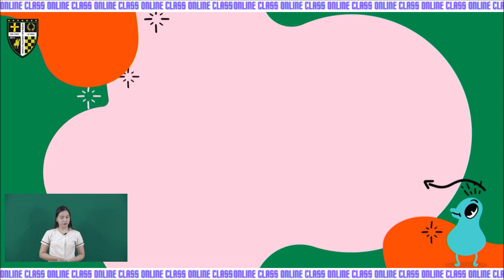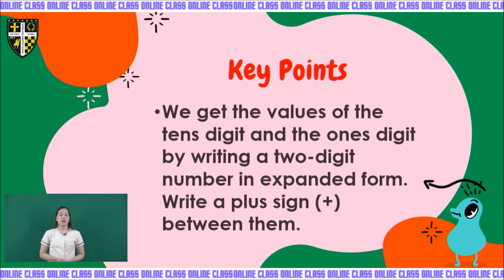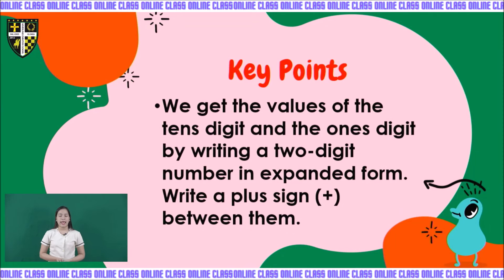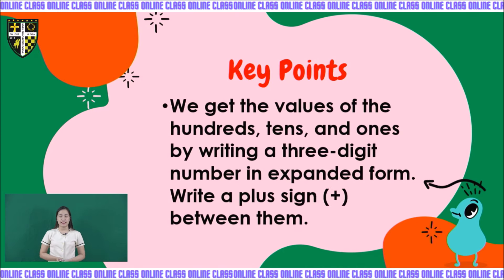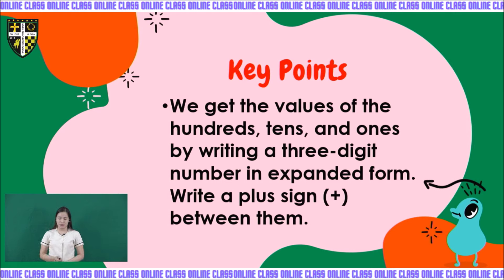Very good, kids. Now, these are the things that you need to remember — the key points. We get the values of the tens digit and the ones digit by writing a two-digit number in expanded form. Write a plus sign between them. We get the values of the hundreds, tens, and ones by writing a three-digit number in expanded form. Write a plus sign between them, just like 600 plus 90 plus 2, which is the expanded form of 692. Do not forget the plus sign — that is the most important thing to remember.